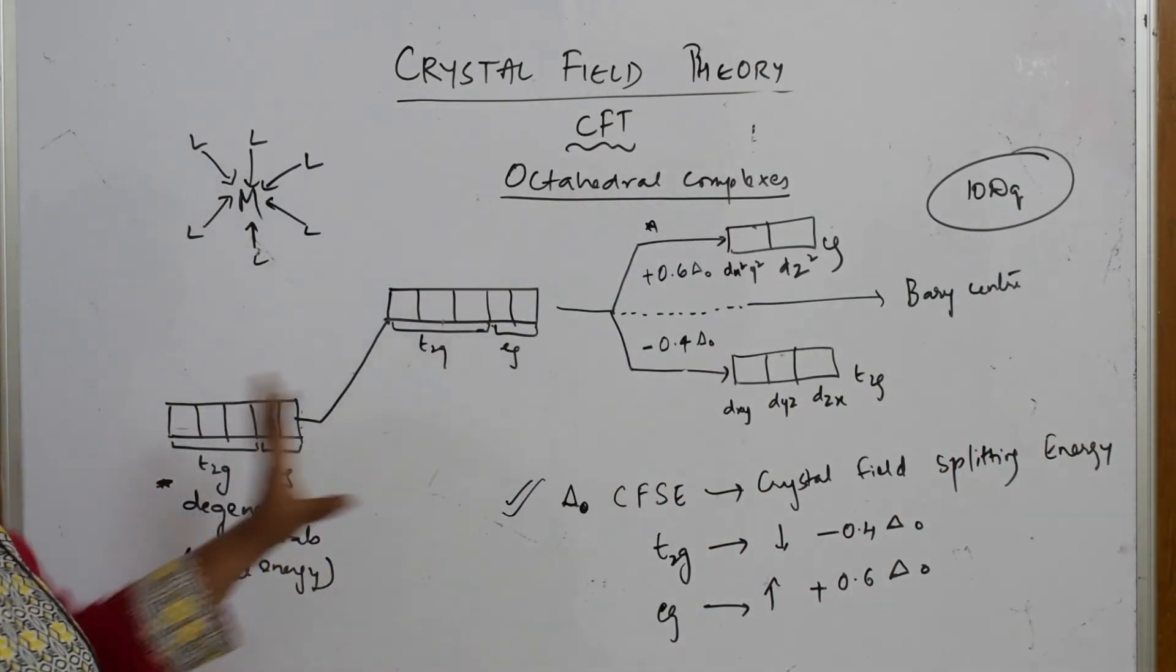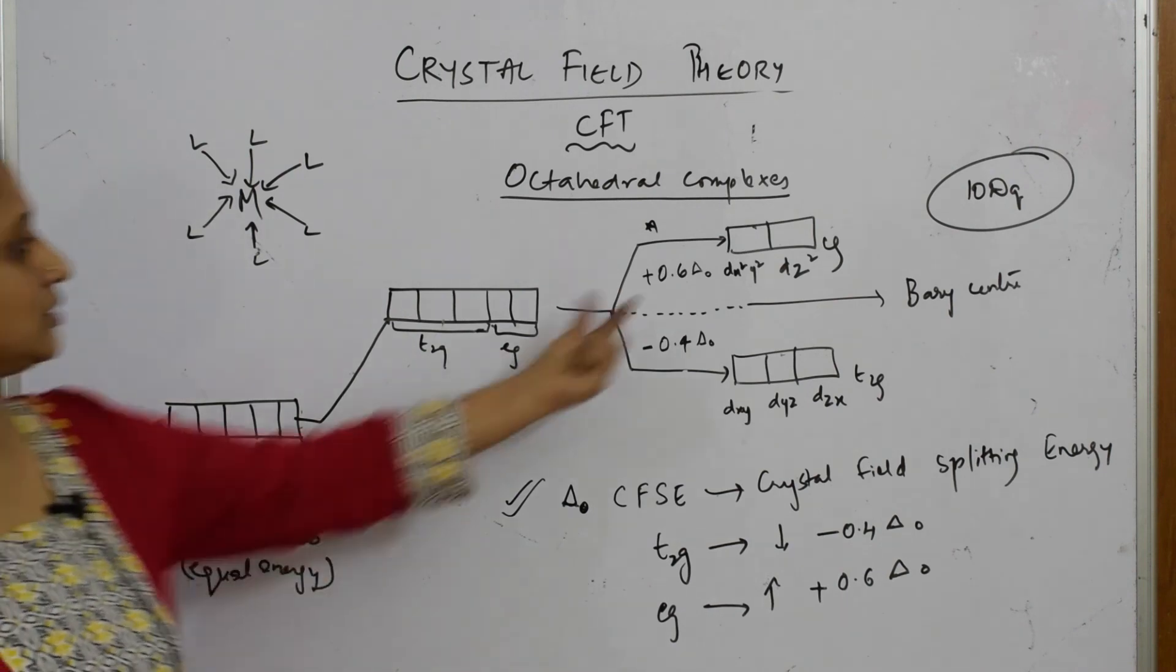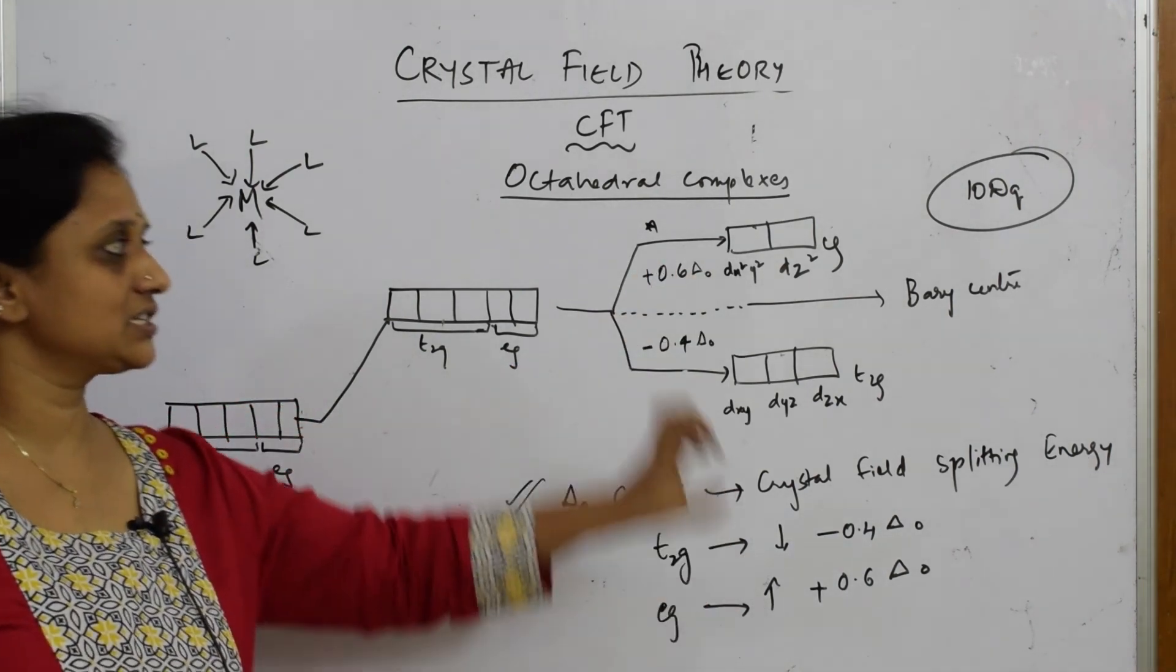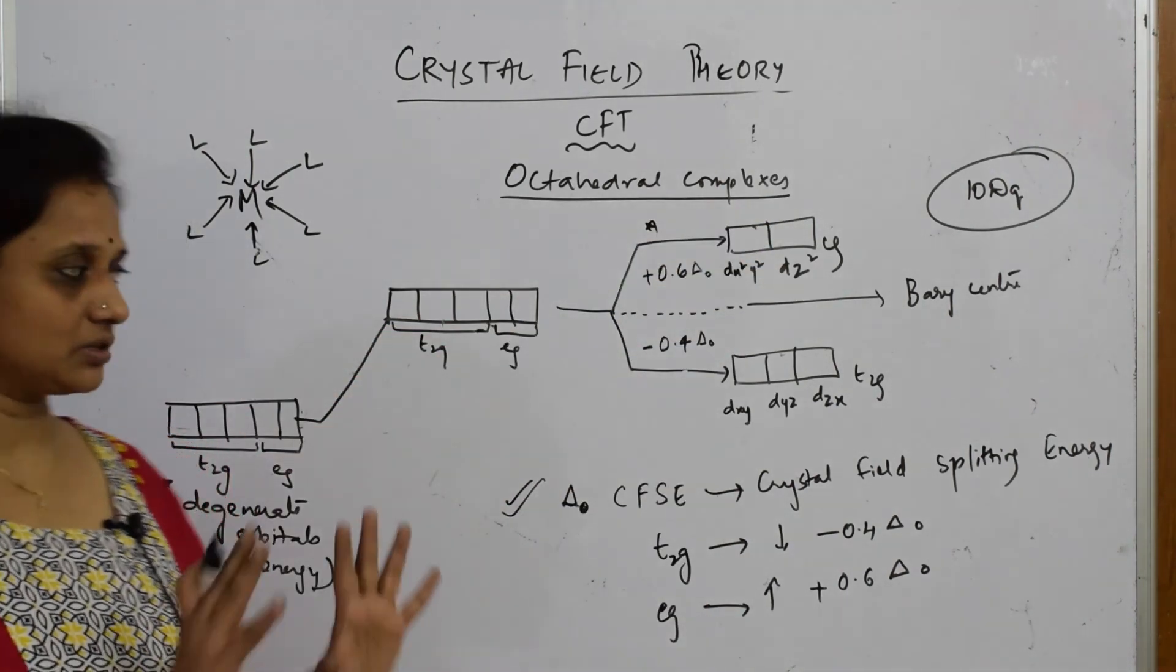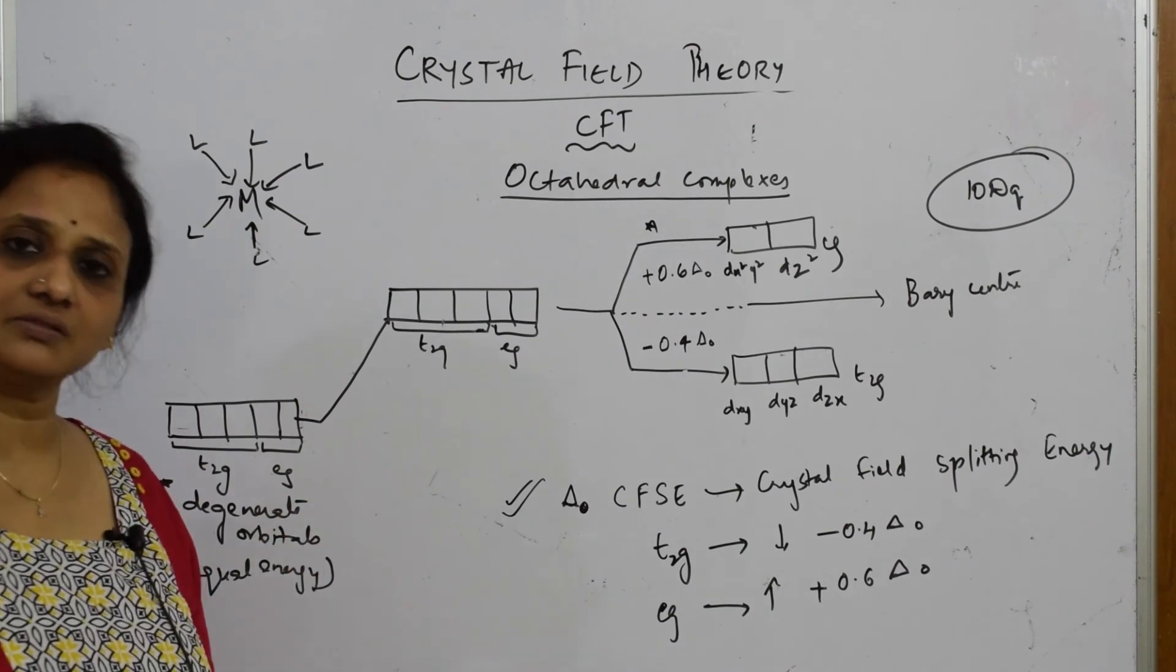This is how we are going to explain octahedral complexes. All this concept - 1, 2, 3, 4, 5, 6, 7 - seven points should be included in the explanation.